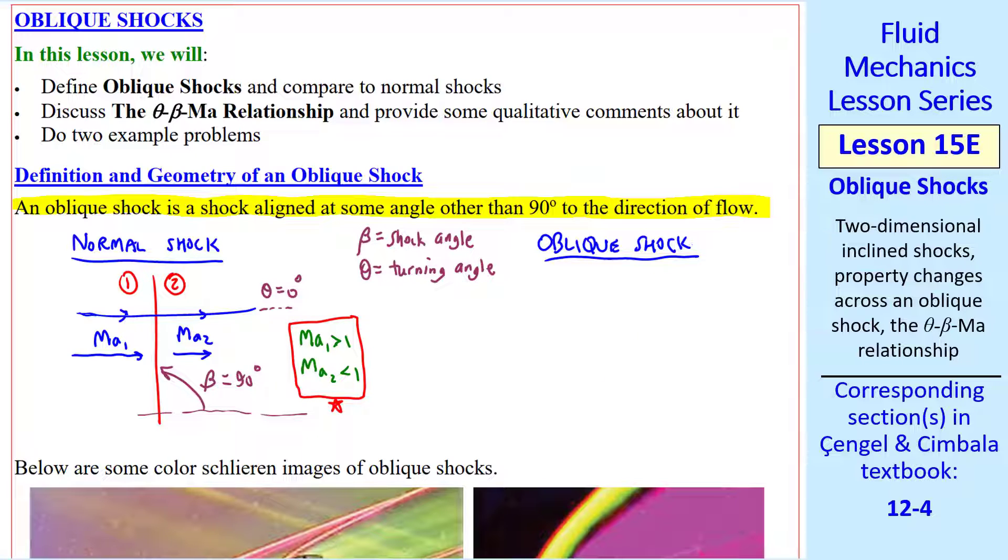Now consider an oblique shock. We still go from 1 to 2. We still have some Mach number MA1 coming in, but shock angle beta is less than 90 degrees. And Mach number 2 is not in the same direction as Mach number 1, so theta is greater than 0. Again, if we draw a streamline, it suddenly turns across the shock, parallel to Mach number 2. That's why we call theta the turning angle.